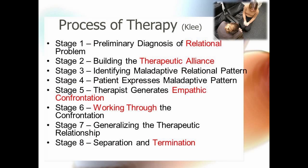According to Klee, the process of object relations therapy involves eight stages. Note that certain stages would be critical and may last longer than others. In these stages, the client would exhibit maladaptive behaviors such as splitting, and the therapist would generate empathic confrontation — setting boundaries, but also showing empathy and care, instead of scorn and even abandonment, which the client may be accustomed to receiving. Over time, as a result of a strong therapeutic relationship, older negative patterns would be replaced by more adaptable ways of relating to others.